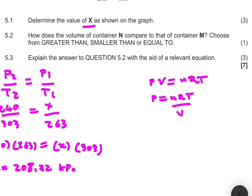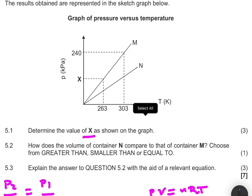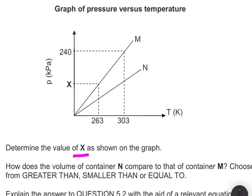From this equation we can clearly see that the pressure is inversely proportional to the volume. Let's go back to our graphs. When the temperature is 303, M has a higher pressure compared to N.